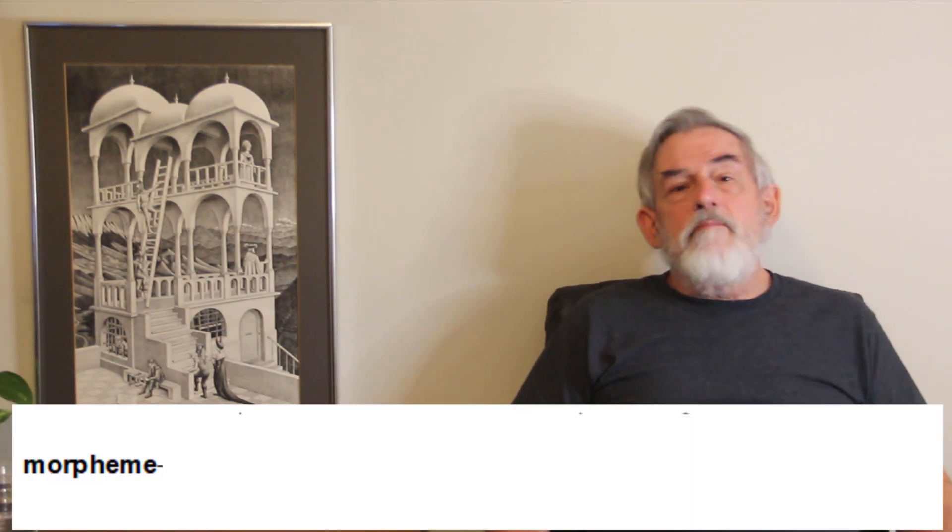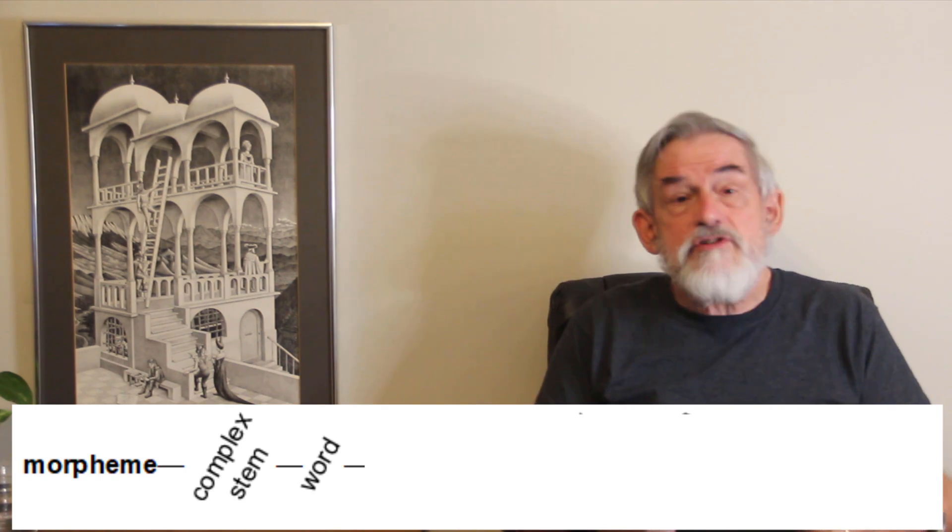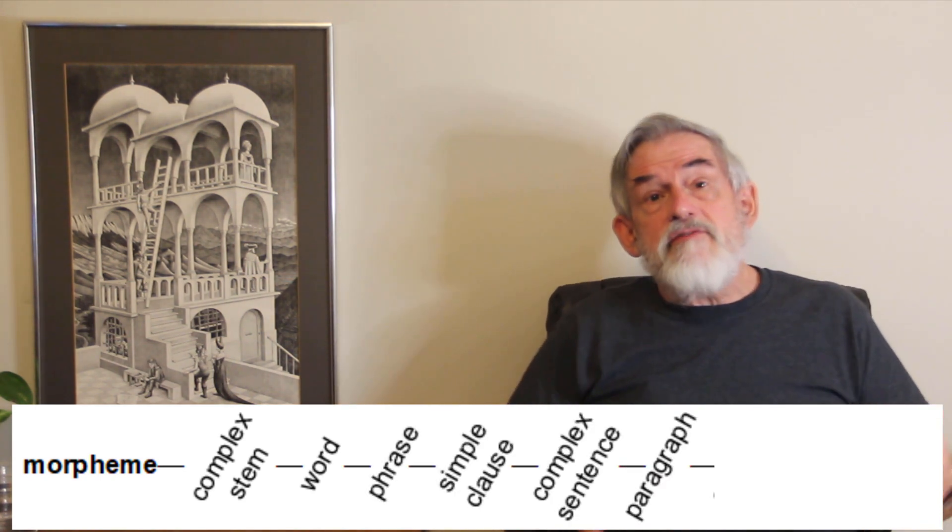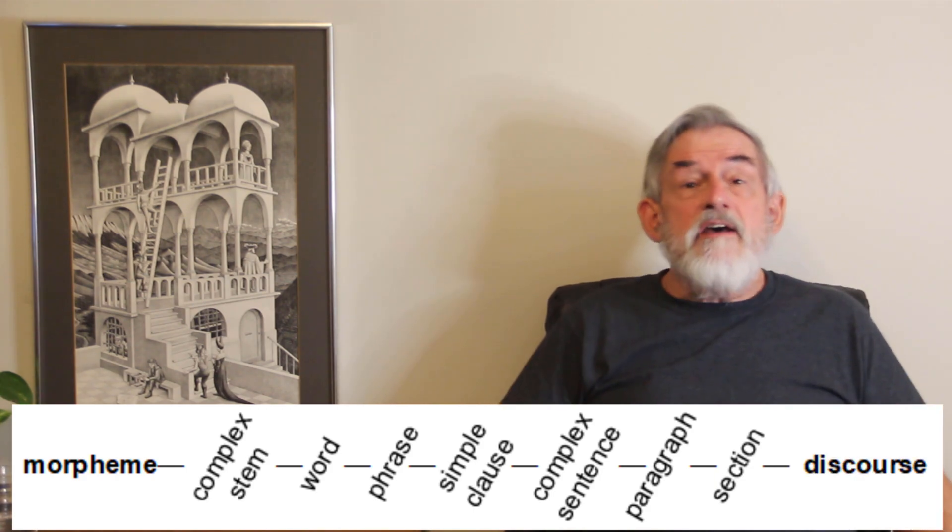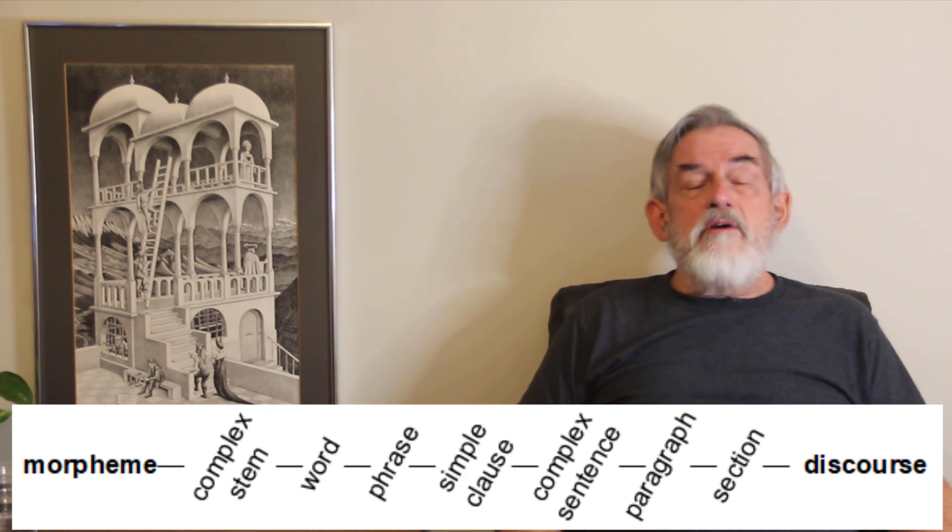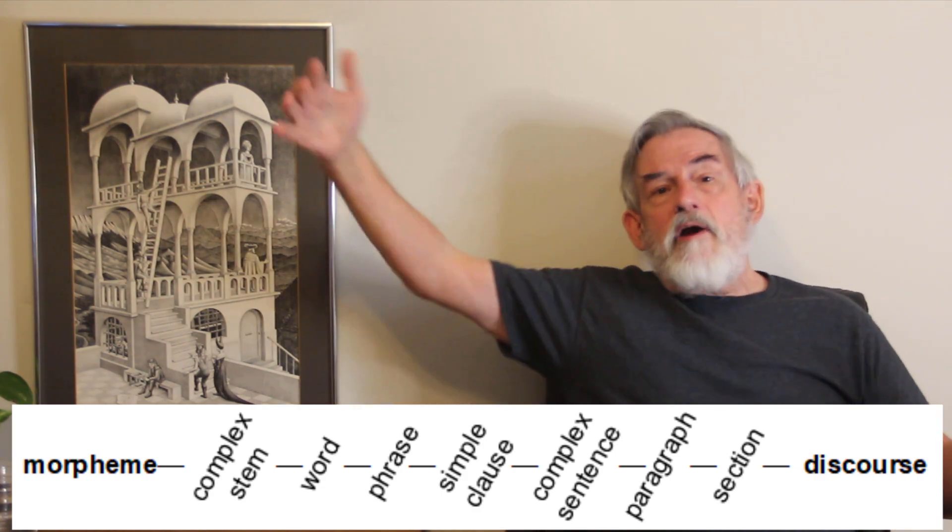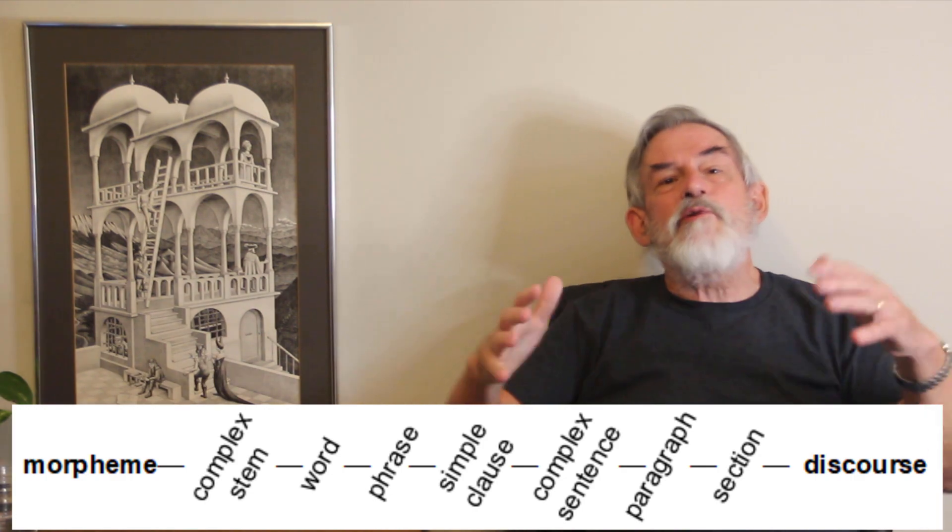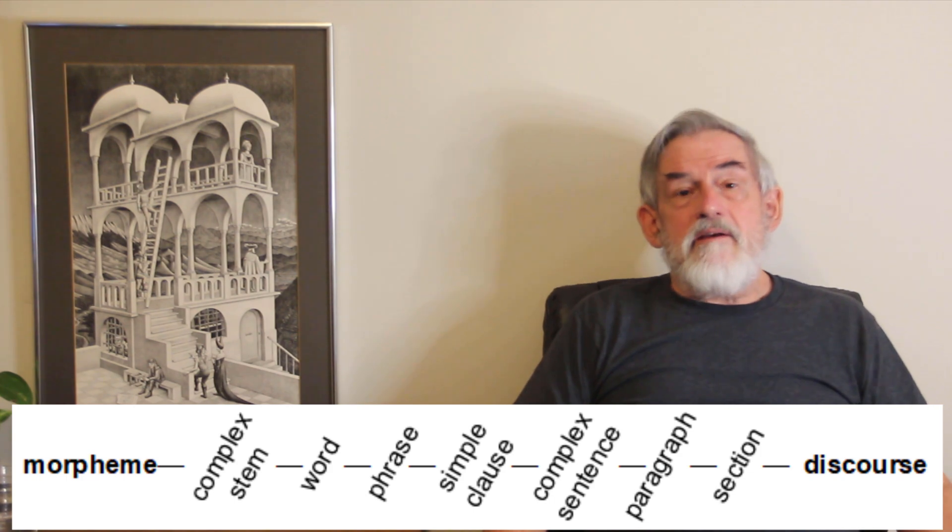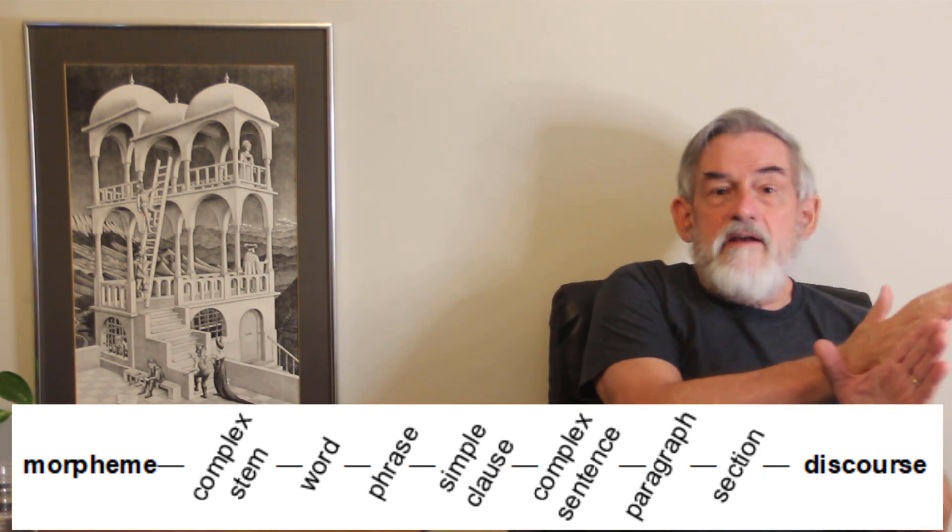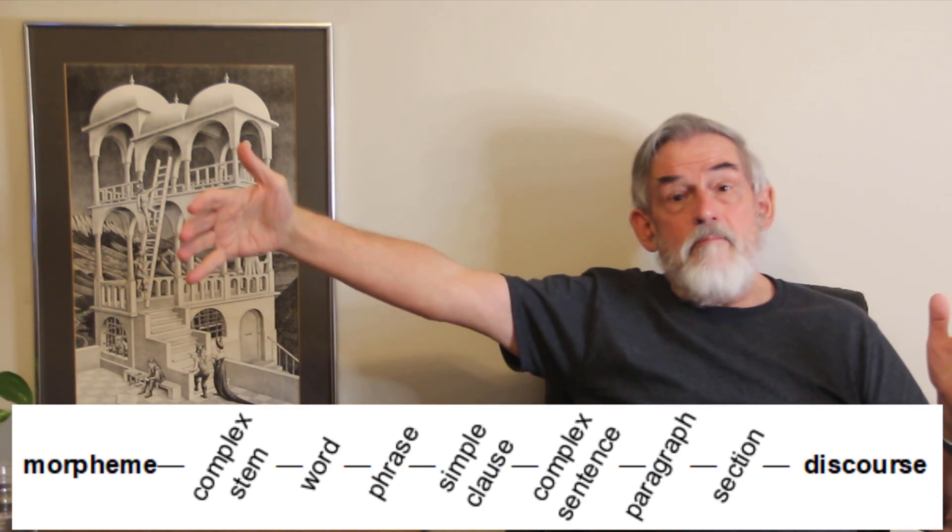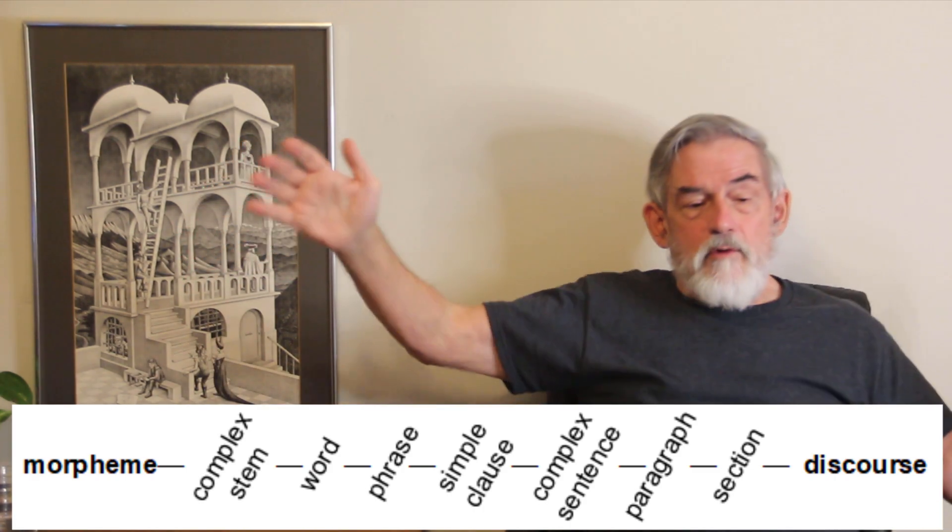When you move away from morphemes, you get into complex stems, words, phrases, clauses, and sentences, and paragraphs, and sections, and discourses, and there's no clear upper limit to how complex things can get. Generally, when you have something more and more complex, you tend to think of it in terms of a discourse, including other discourses, or something of that sort. But it is very clear that at the morpheme end, you have relatively simple structures, and at the discourse end, you have very complex structures, and there's a whole gradation in between.